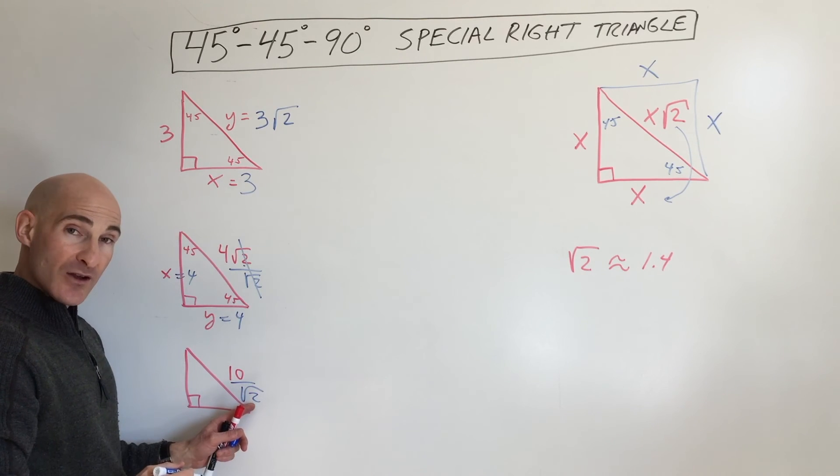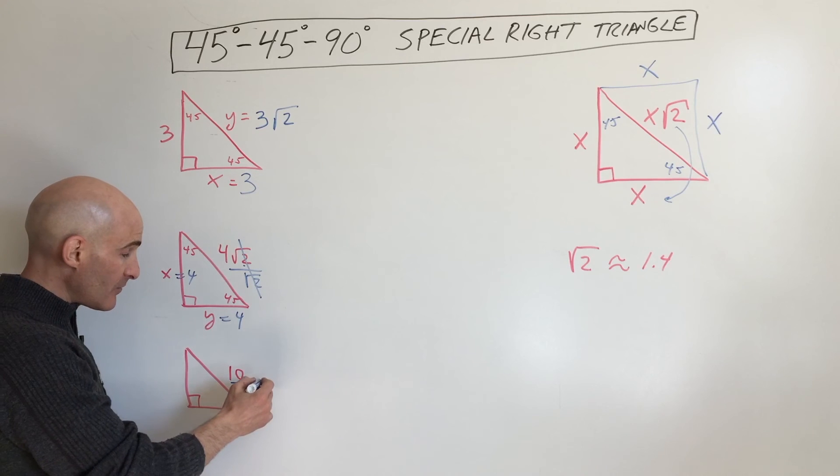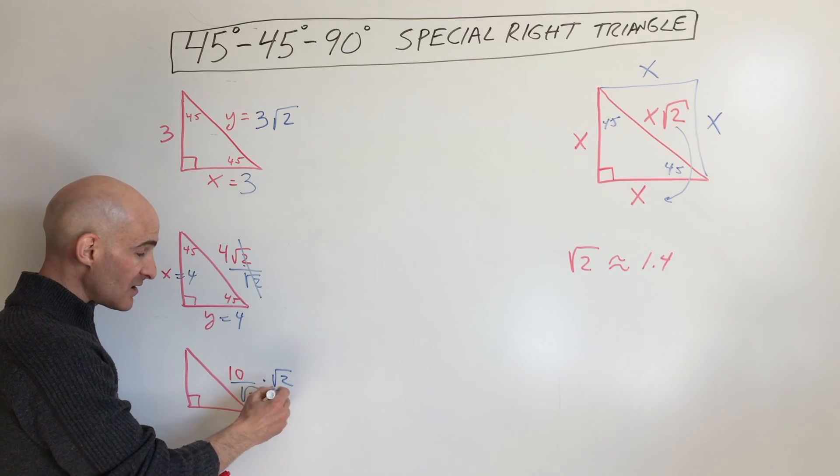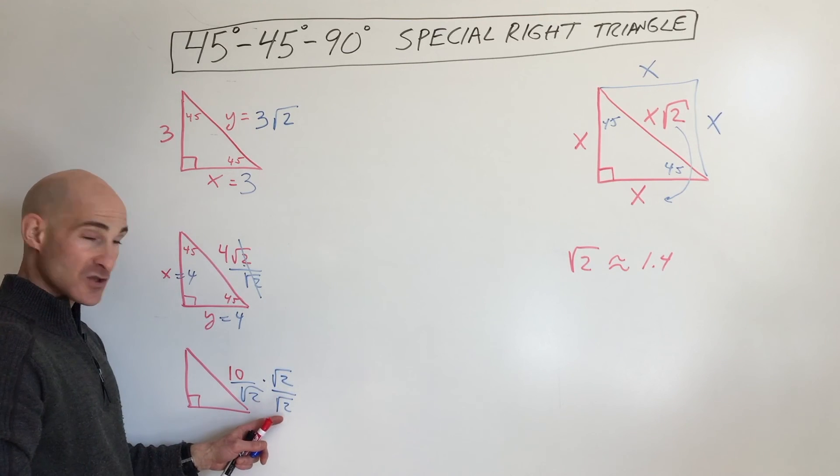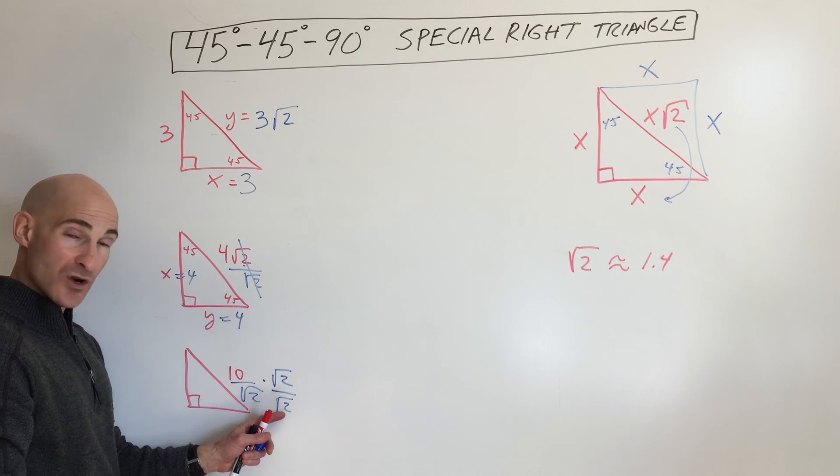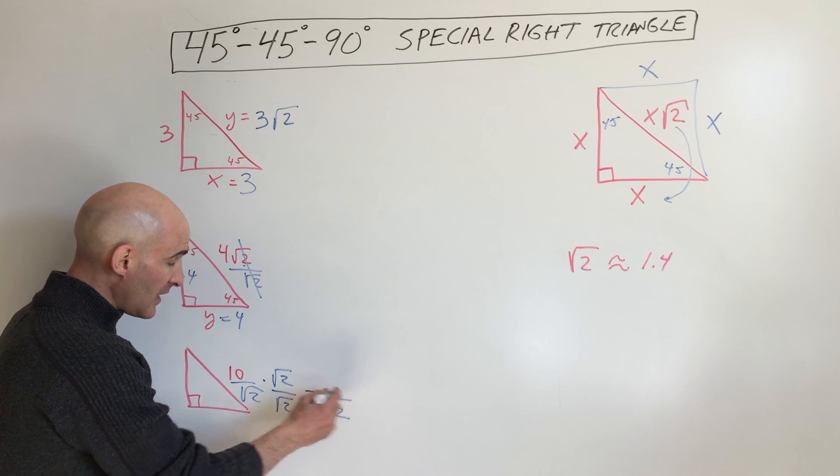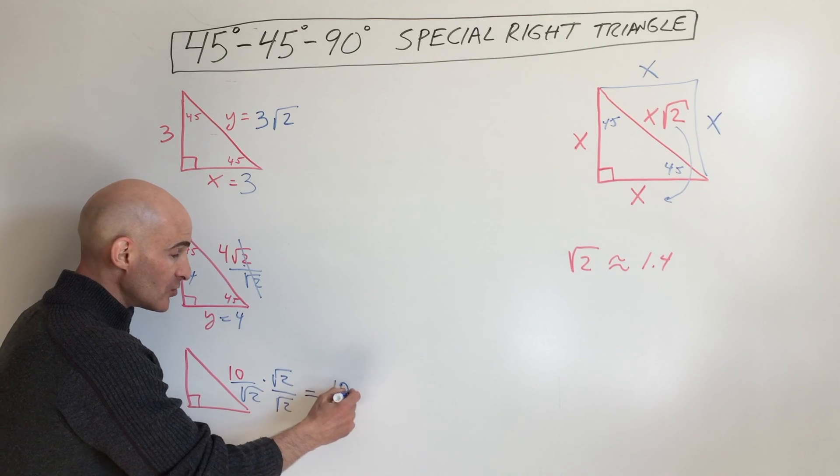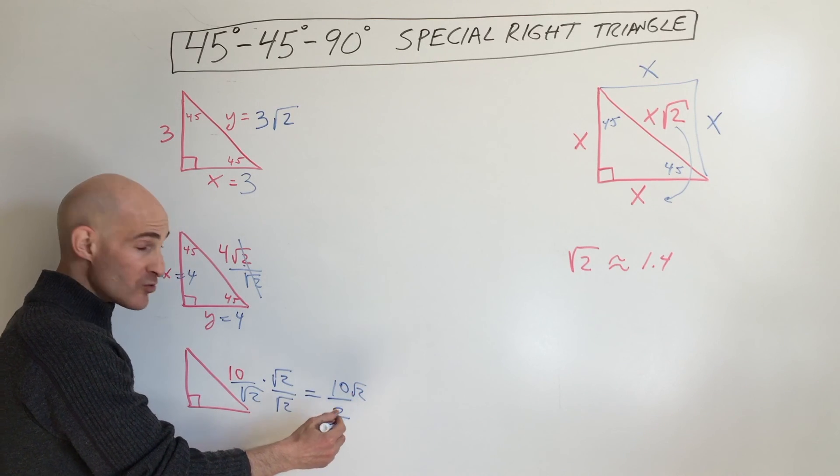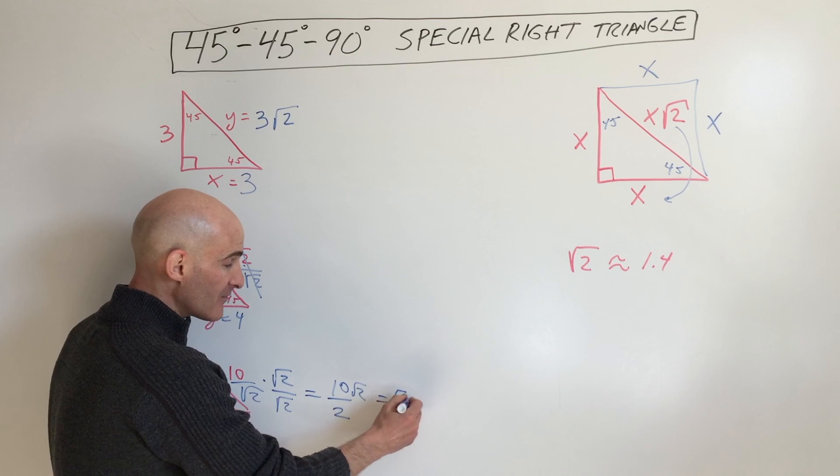But we don't want the radical in the denominator. So what do we do to get rid of the radical in the denominator? We rationalize by multiplying by square root of 2 over square root of 2. This way, square root of 2 times square root of 2 gives us square root of 4, which is 2. And we get 10 times the square root of 2. The 10 and the 2 we can reduce, so that's going to be 5 square root of 2.